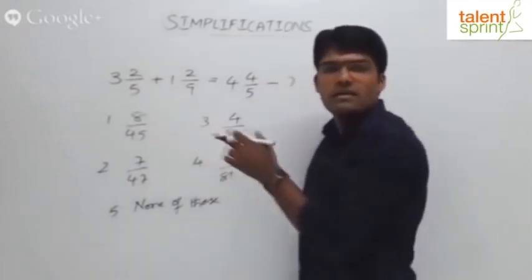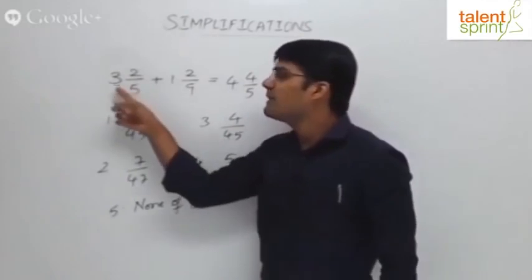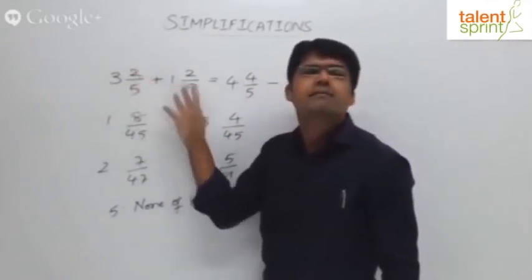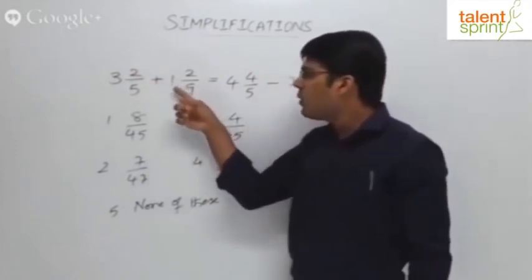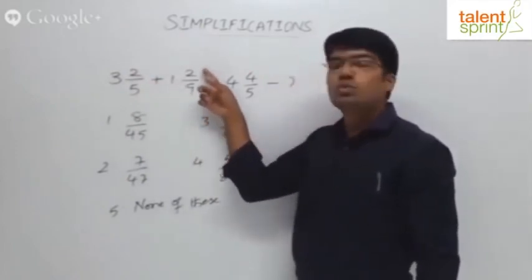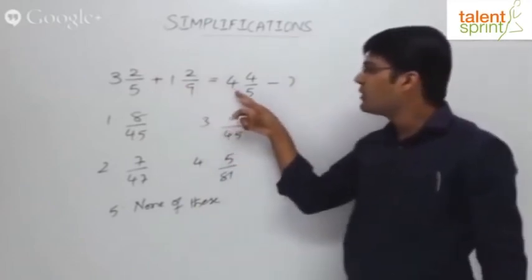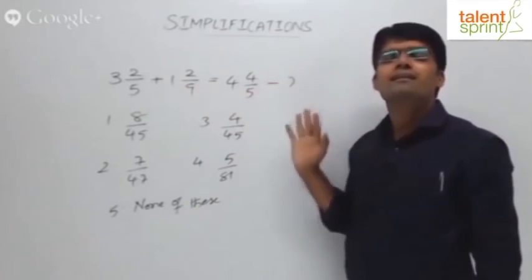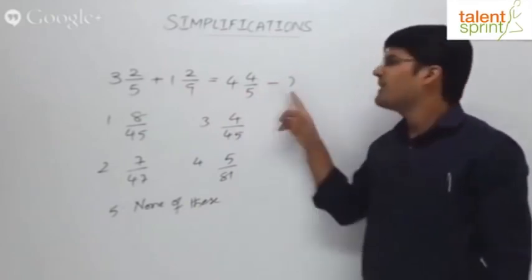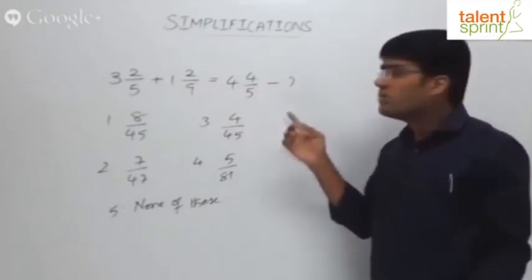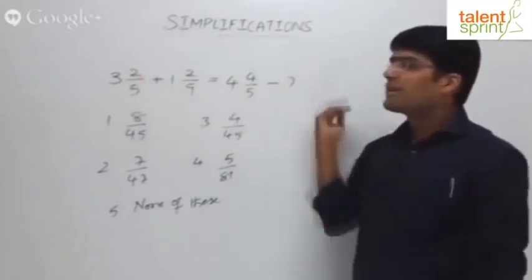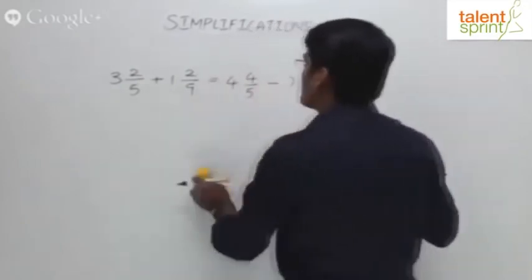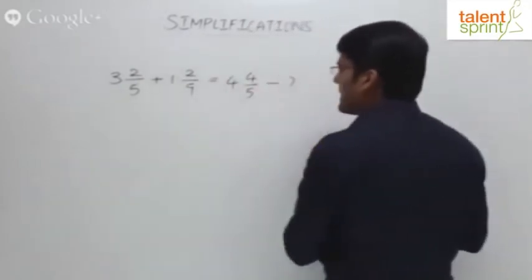Multiply the integer part with the denominator: 3 into 5 is 15, plus 2 is 17 — so 17/5. Likewise, 1 and 2/9: 1 into 9 is 9, plus 2 is 11 — so 11/9. And 4 and 4/5: 4 into 5 is 20, plus 4 is 24 — so 24/5. So the equation becomes 24/5 minus question mark.